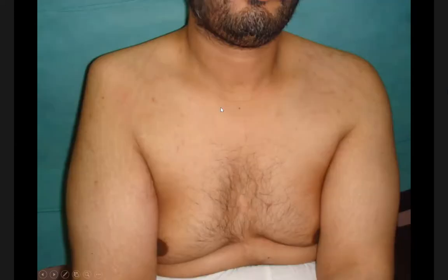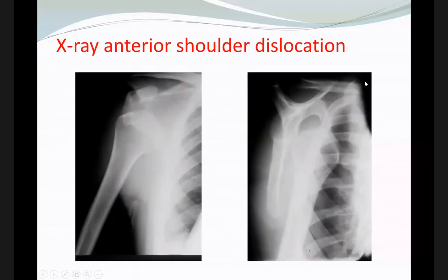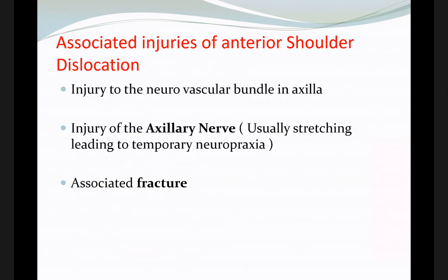You can see a gap above the dislocated head of the humerus and a difference between the two shoulders. The affected side appears flat where the humeral head should be. X-ray will show the anterior dislocation of the shoulder, with the head going inferiorly and anteriorly, not showing the normal contour.